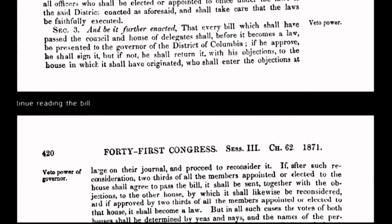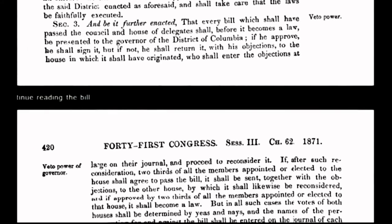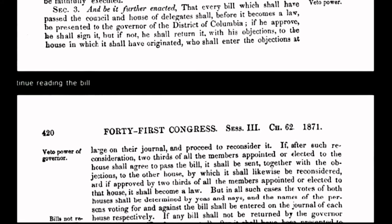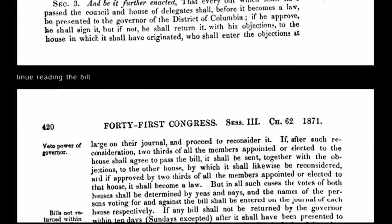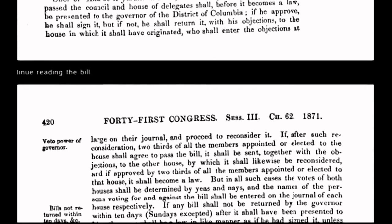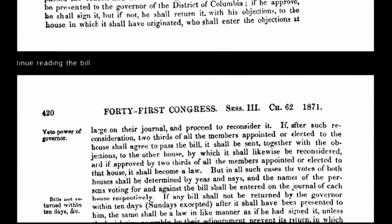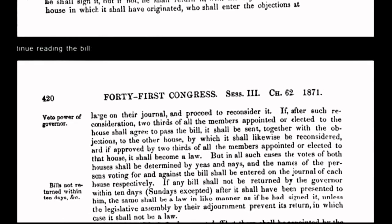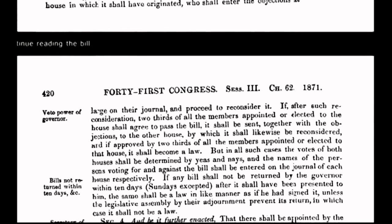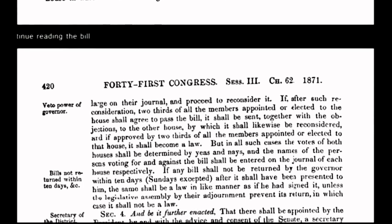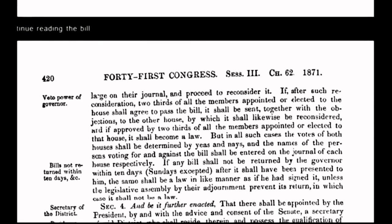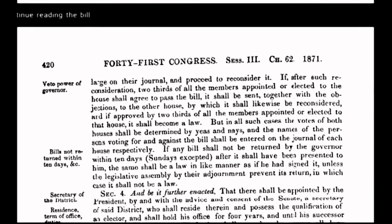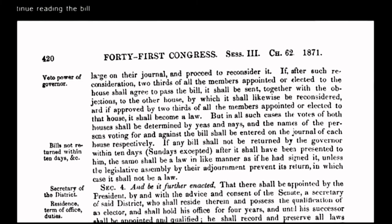What Congress did by passing the Act of 1871 was create an entirely new document — a constitution for the government of the District of Columbia, an incorporated government. This newly altered constitution was not intended to benefit the republic. It benefits only the corporation of the United States of America and operates entirely outside the original, organic constitution. Instead of having absolute and unalienable rights guaranteed under the organic constitution, we the people now have relative rights or privileges.